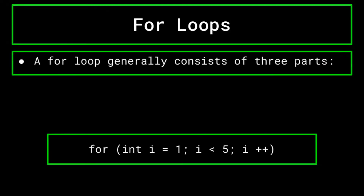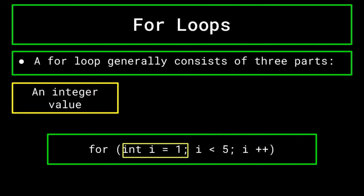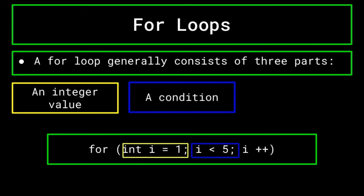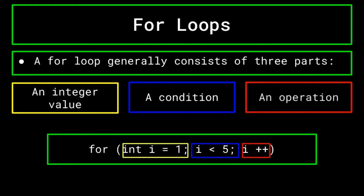A for loop is very useful for situations like the one described above, where you would like to carry out a certain set of instructions multiple times. The syntax of a for loop varies depending on what language you are using. However, in most of them, it consists of three parts: an integer value, a condition for which the loop will continue to run as long as it is met, and an operation to modify the integer value that you initialized.